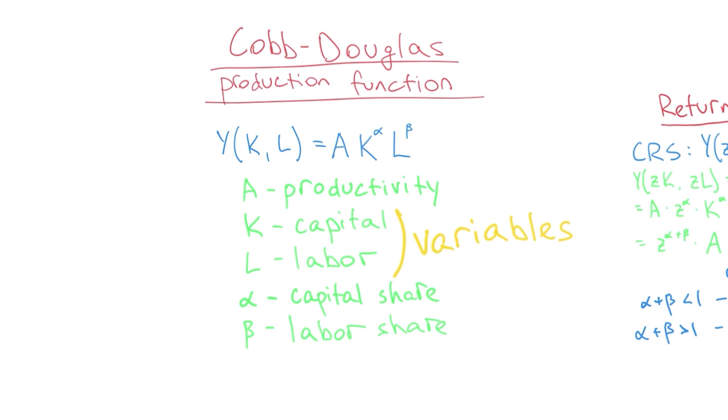Alpha is the capital share so it's what proportion or percentage of your inputs are capital such as supplies if you're a factory or fields if you're a farmer. And beta is the labor share or what percentage of your two inputs is labor. So that's the basics, let's go on to the next thing.